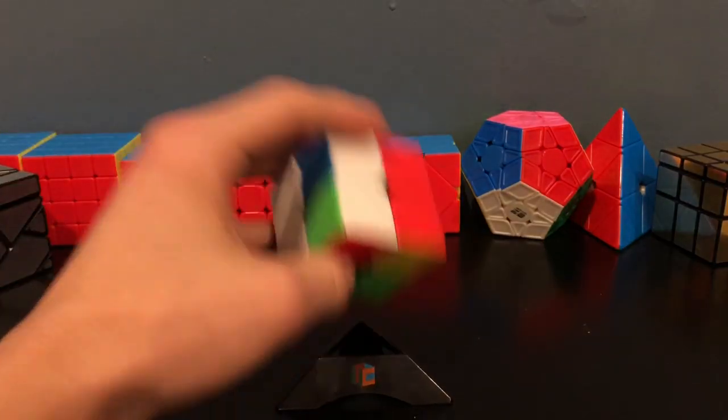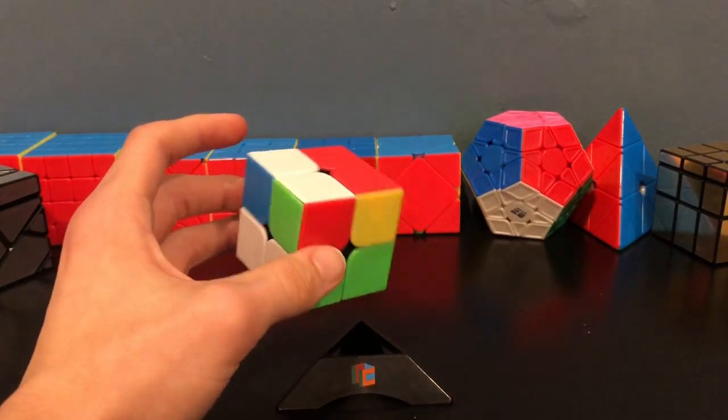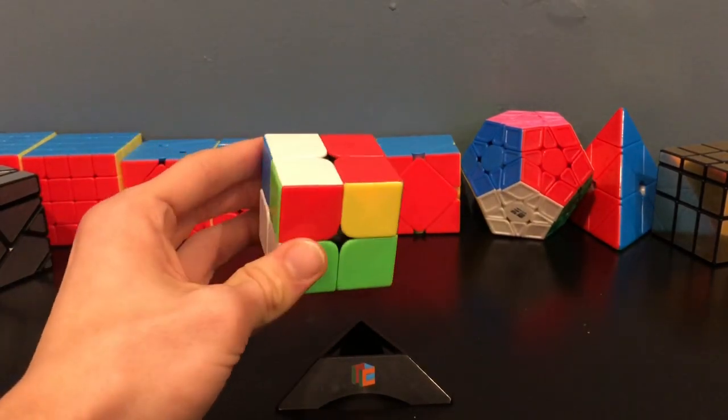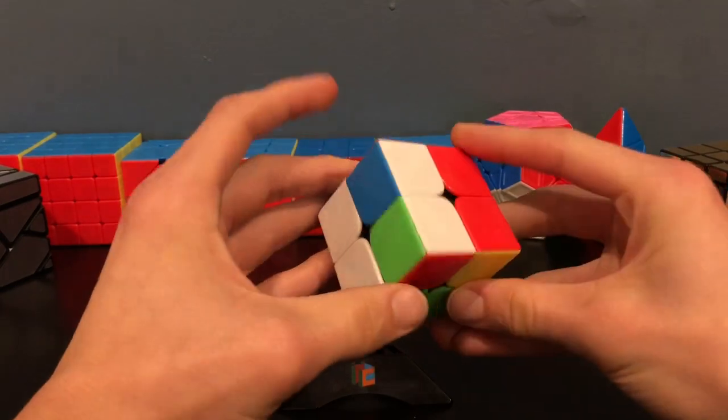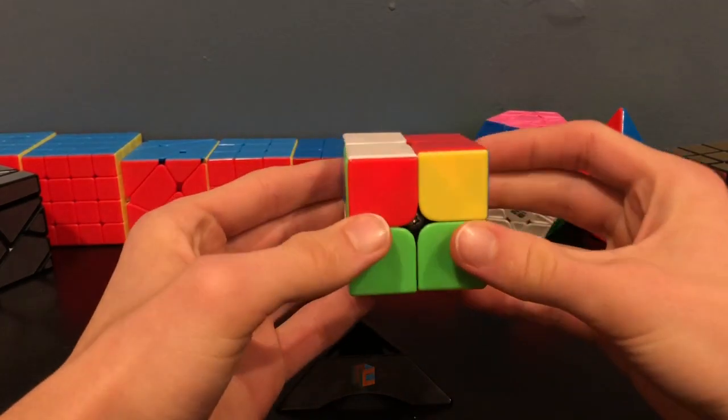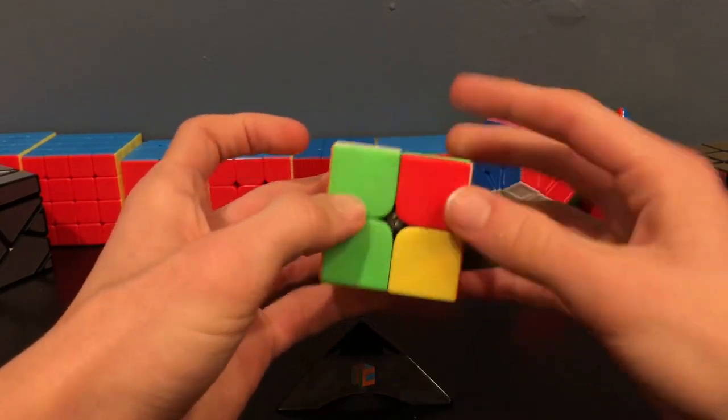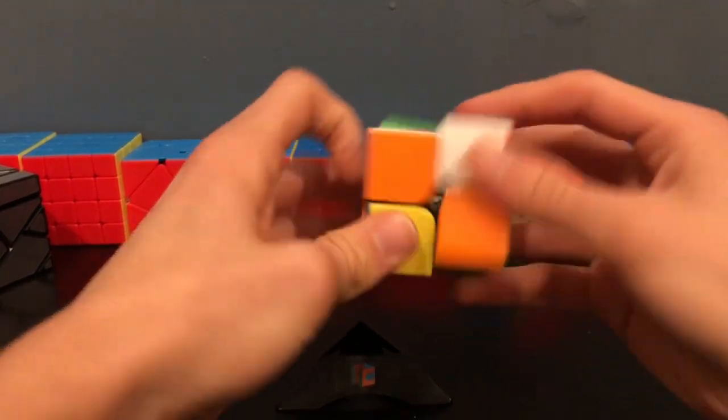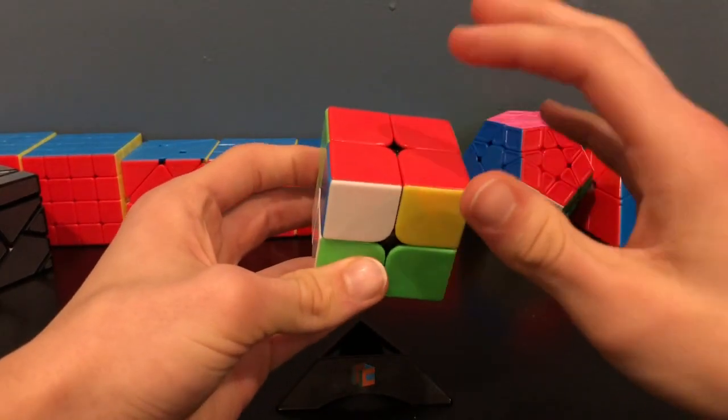OLL is going to be a little bit trickier. Luckily, there's only seven cases, so we'll just go over all of them right now. So this is the case that we're going to be trying to get to with blinkers right here. Because as you can see, if we turn the cube like this, do our T-PERM, then we will have oriented the last layer.